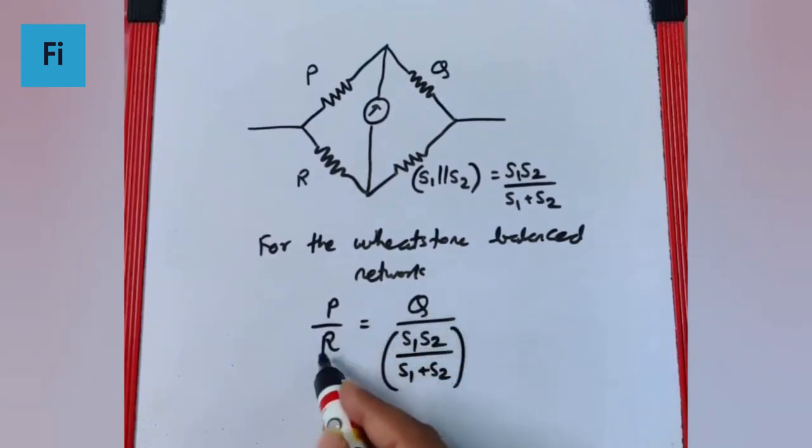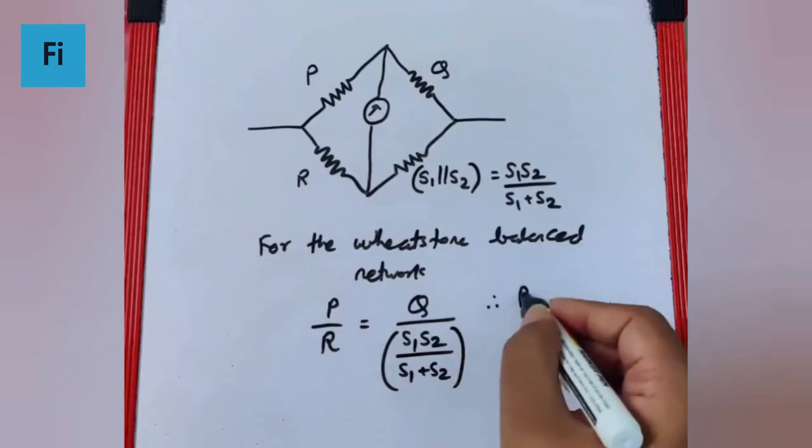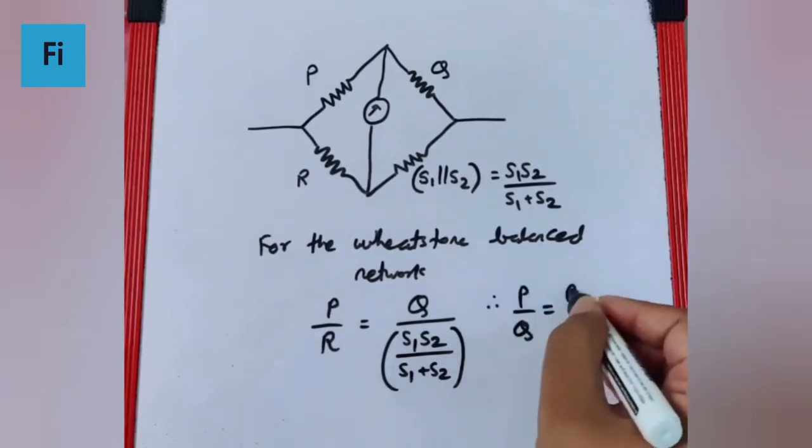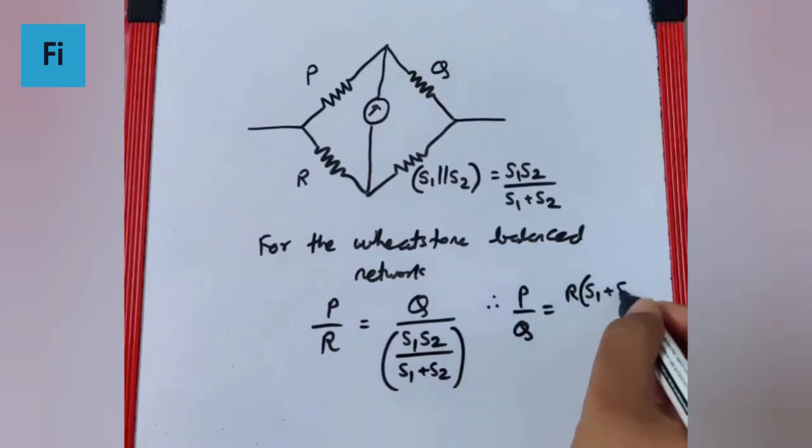Now you can take Q over here and R over here, and you get P/Q equals R(S1 + S2)/(S1·S2).